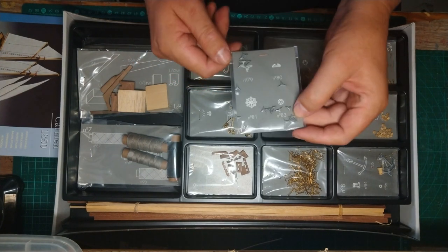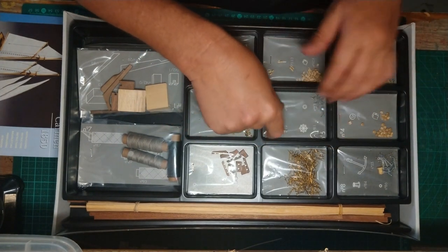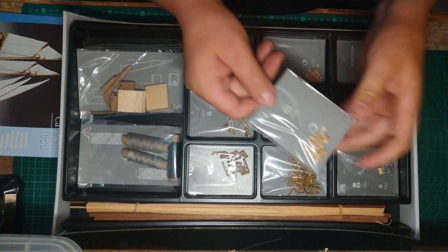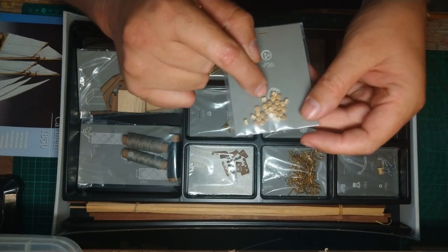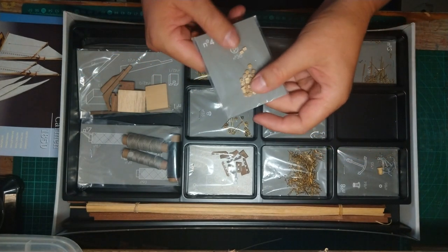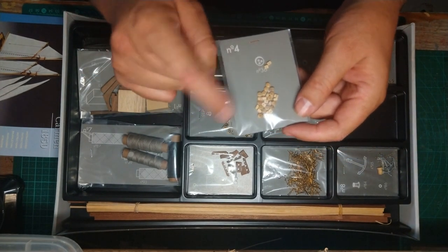That is the wheel of the ship itself. In package number four, we've got a little bit of wooden blocks as well. I think these blocks are there for all the sails and for all the wiring.